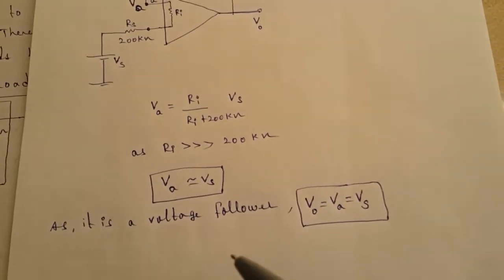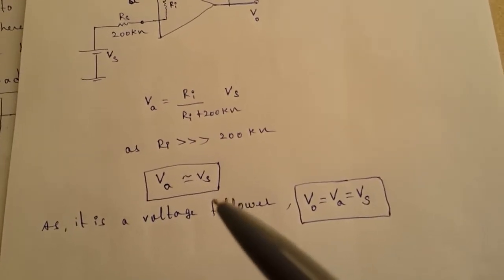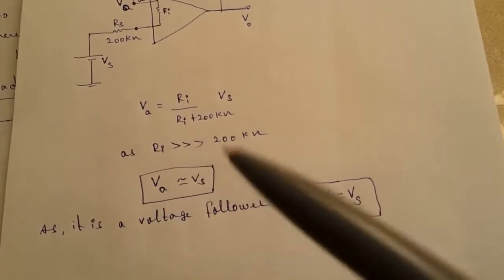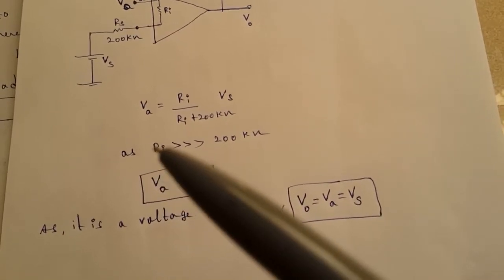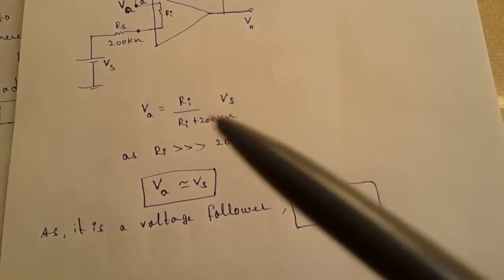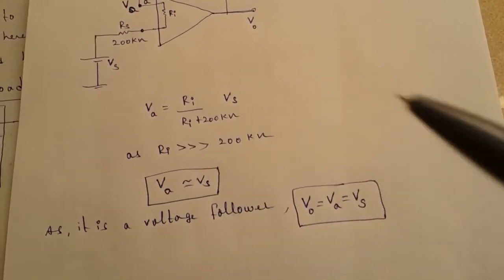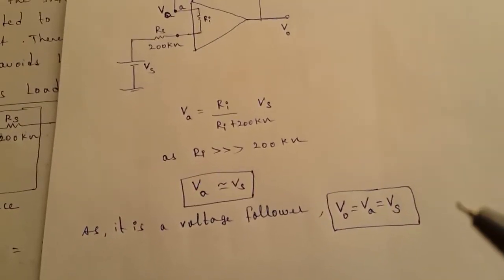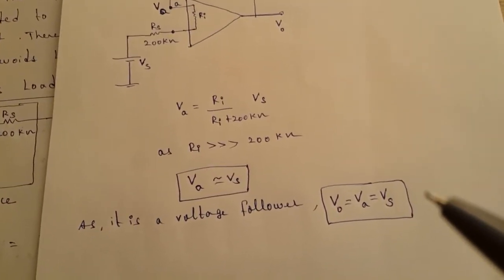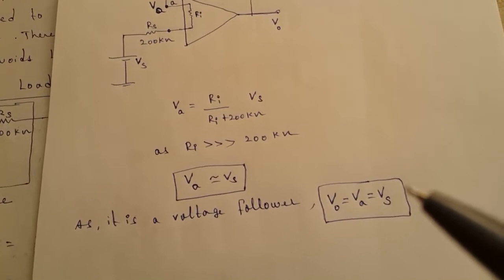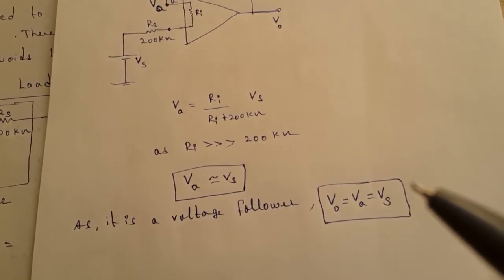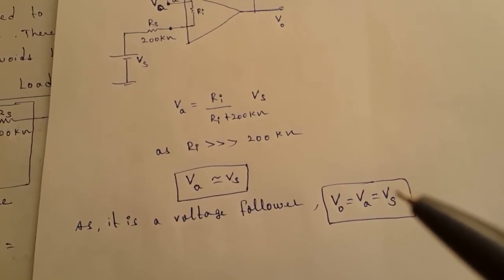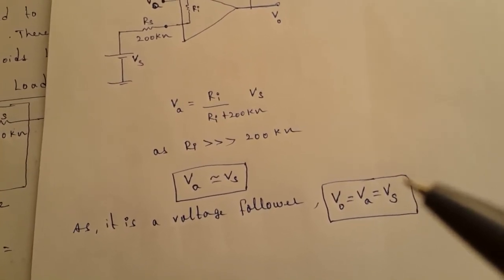In the earlier case without the voltage follower, the output was only 1/100 of VS — the source was highly attenuated. By connecting high input impedance amplifiers like voltage followers between the source and load, the loading effect is avoided, and signals such as transducer outputs in the order of microvolts and millivolts can be accurately measured. Thank you for watching.